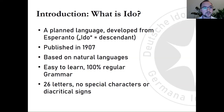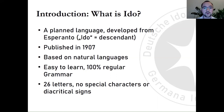I would like to start with a question for those of you who don't know: what even is Ido? Ido is a planned language developed from Esperanto. The word Ido literally means descendant. It was published in 1907 and it is based on natural languages — for example, German, French, Russian, English. It is relatively easy to learn. We have 100% regular grammar, and we only have 26 letters, no special characters or diacritical signs, like in Esperanto.